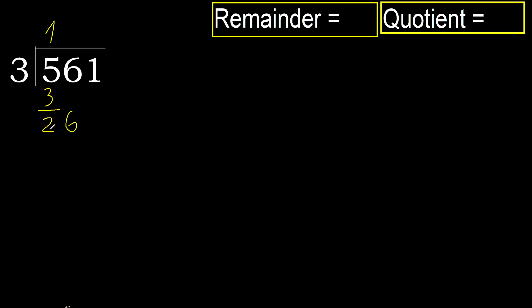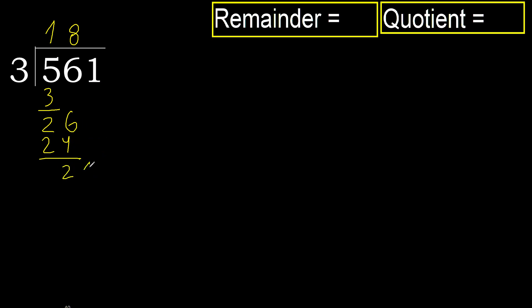26: 3 multiplied by 9 is 27, which is greater. Multiply by 8: 24, which is not greater. Subtract. Next, bring down: 21.